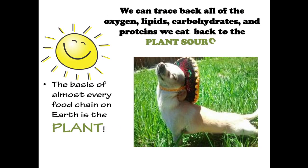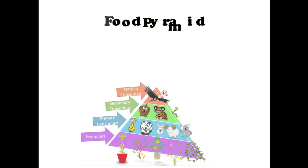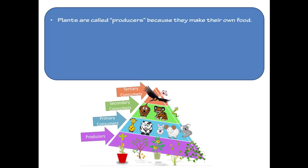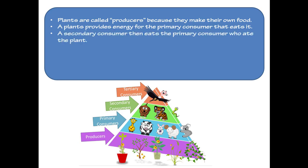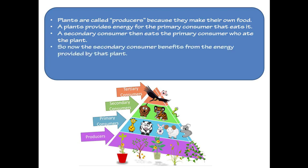We can trace back all of the oxygen, lipids, carbohydrates, and protein we eat back to a plant source. The basis of almost every food chain on Earth is the plant. Plants are called producers because they make their own food. A plant provides energy for the primary consumer that eats it, a secondary consumer then eats the primary consumer, and that secondary consumer can then be consumed by a tertiary consumer and so on.